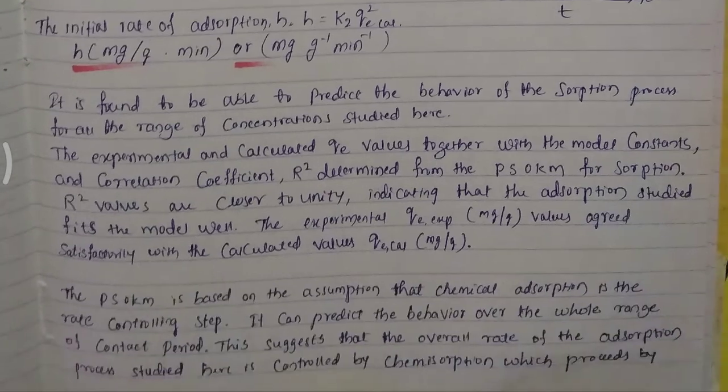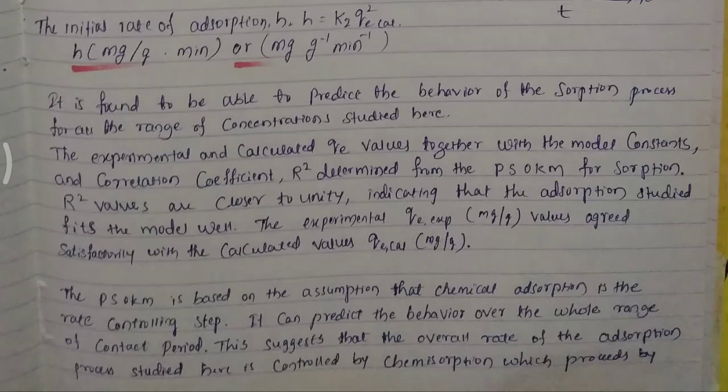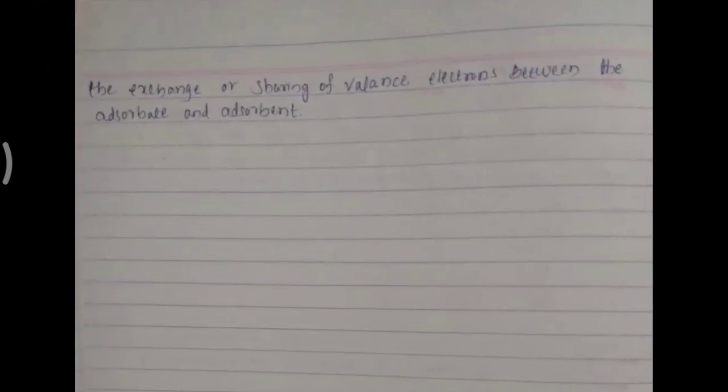The pseudo second order kinetic model is based on the assumption that chemical adsorption is the rate controlling step. It can predict the behavior over the whole range of contact period. This suggests that the overall rate of the adsorption process is controlled by chemisorption, which proceeds by the exchange or sharing of valence electrons between the adsorbate and adsorbent. Thank you.